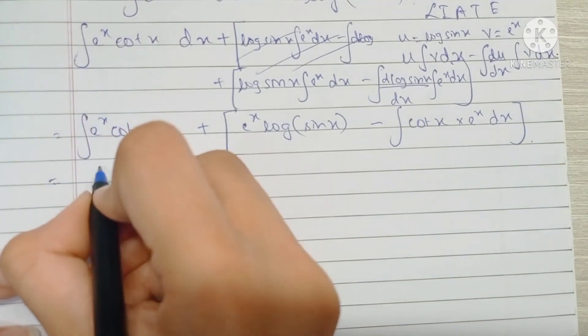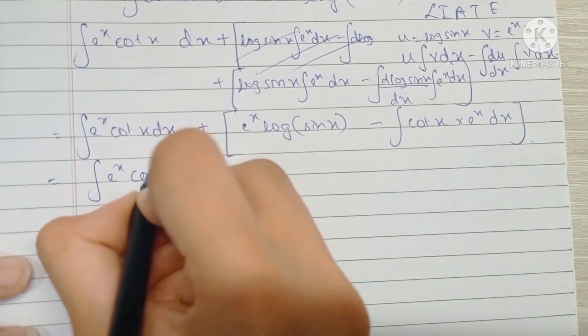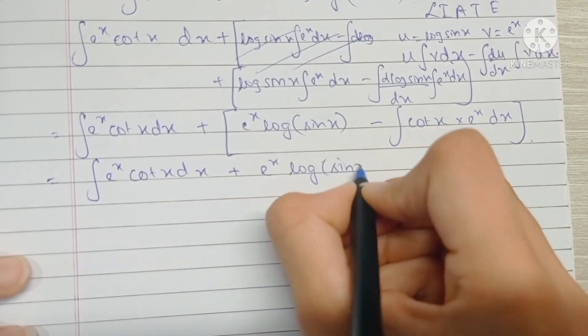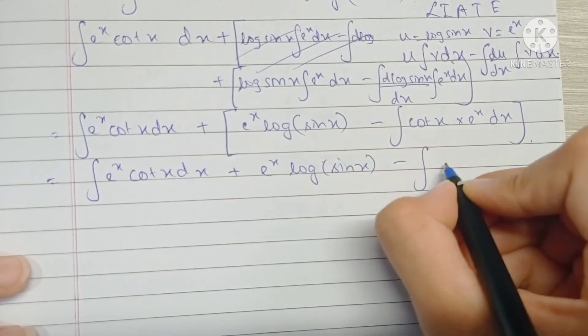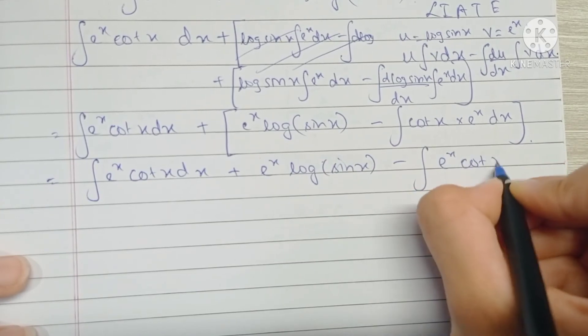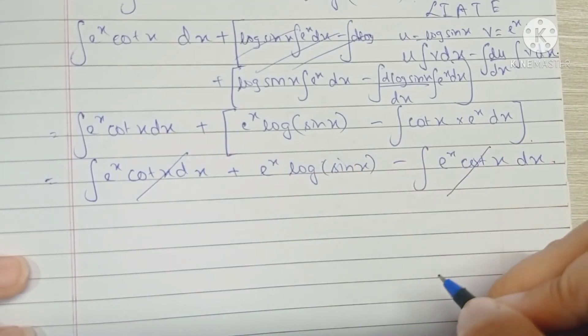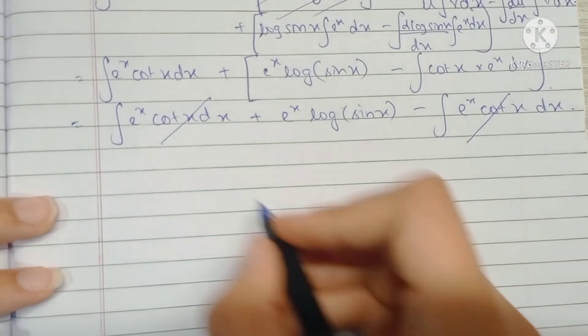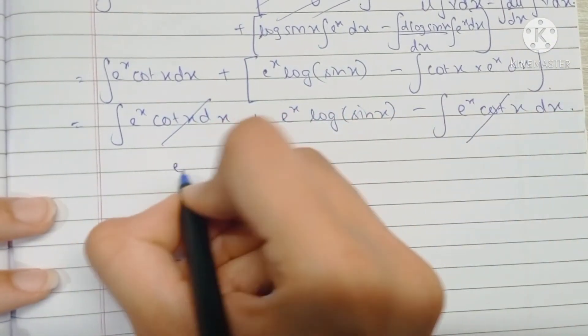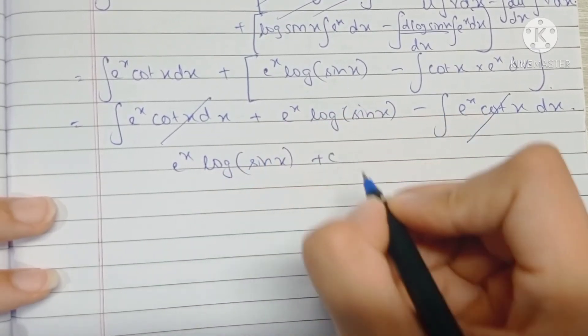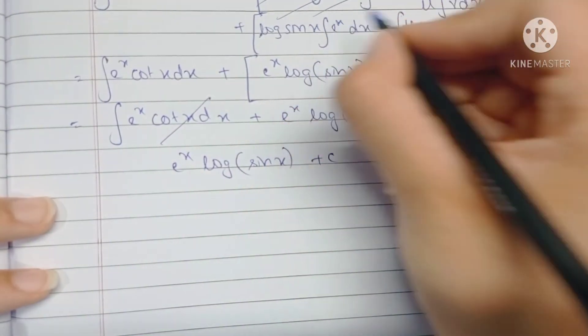So as you can see, we have e raised to x cot x plus e raised to x log sin x minus the integral of e raised to x cot x. So this integral and this integral gets cancelled because of the minus sign, and we're left with the final answer: e raised to x log sin x plus c, which comes from integrating this e raised to x.